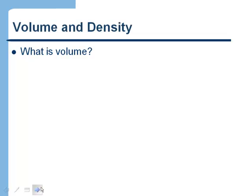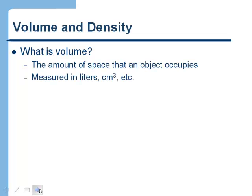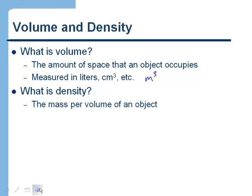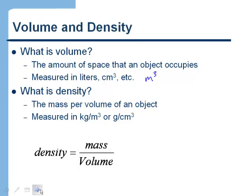Volume is the amount of space that an object occupies — different from mass, which is the amount of matter. Volume is measured in units such as liters, centimeters cubed, or meters cubed. Density is the mass per unit volume of an object, measured in units like kilograms per meter cubed or grams per centimeter cubed.